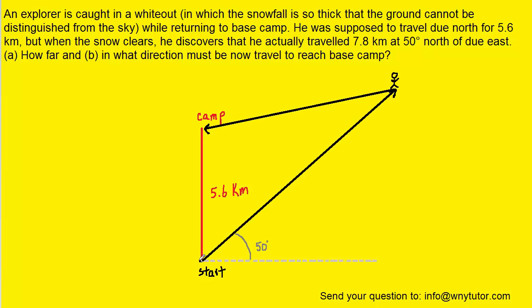So let's assume that the Explorer starts at this point right here and we've marked that start. The desired trajectory was to travel due north for 5.6 kilometers until he reached camp, but unfortunately he went off course because of the snowstorm.